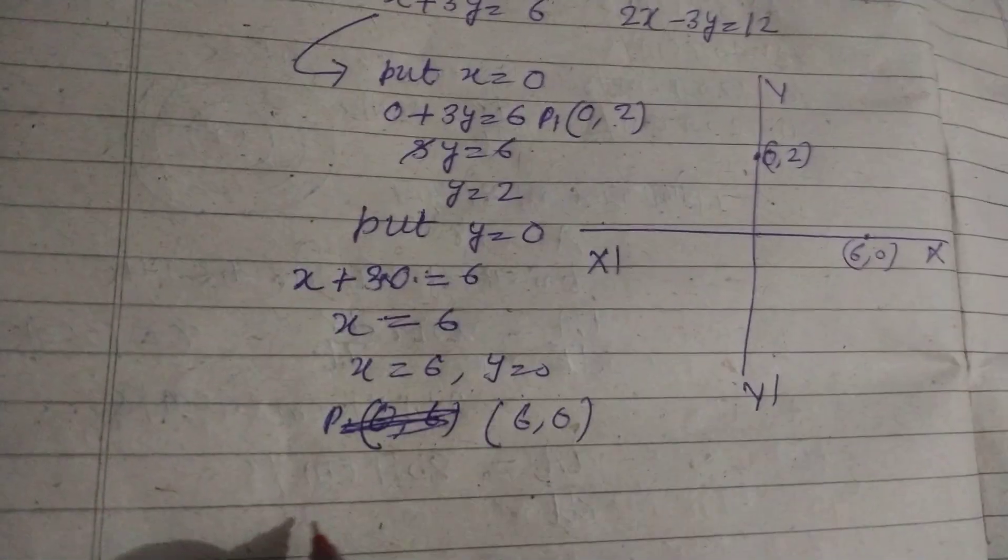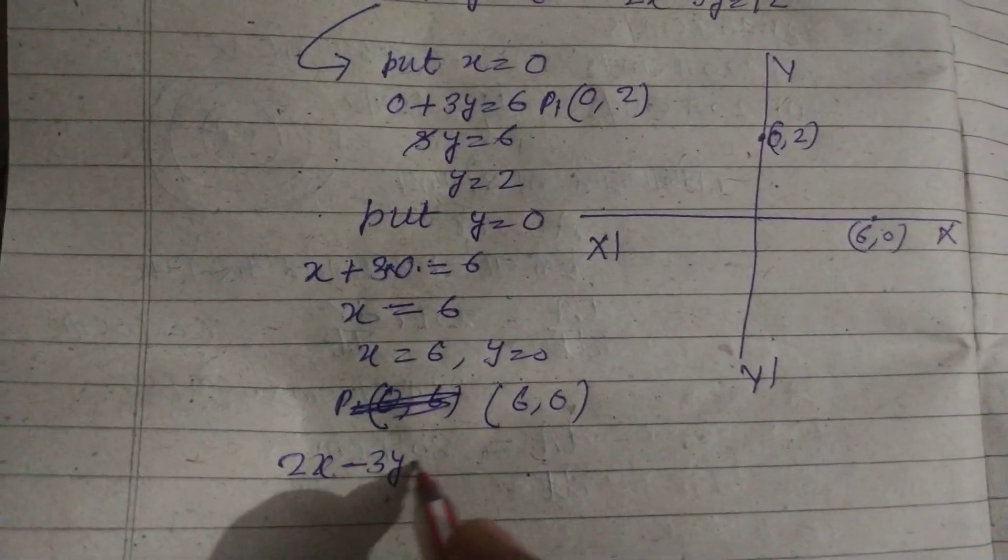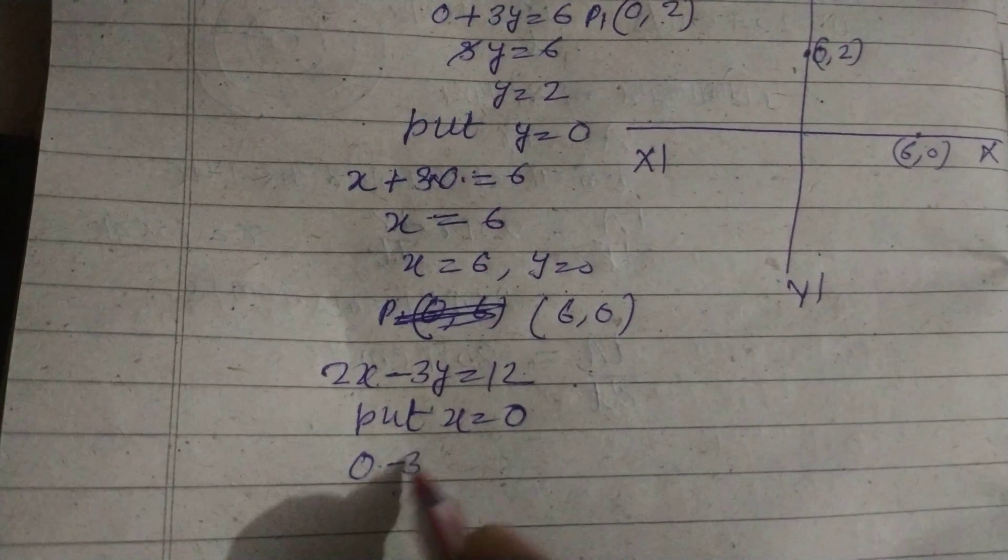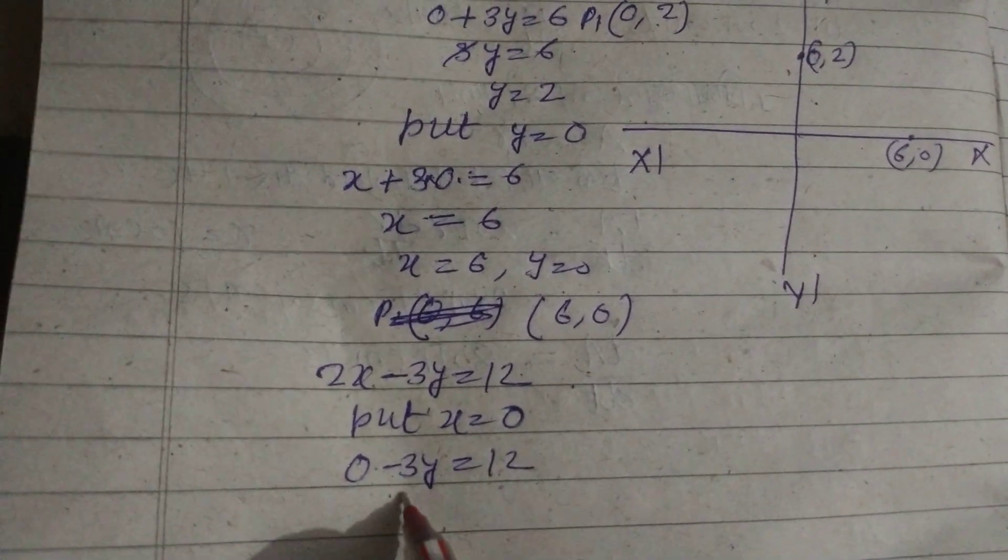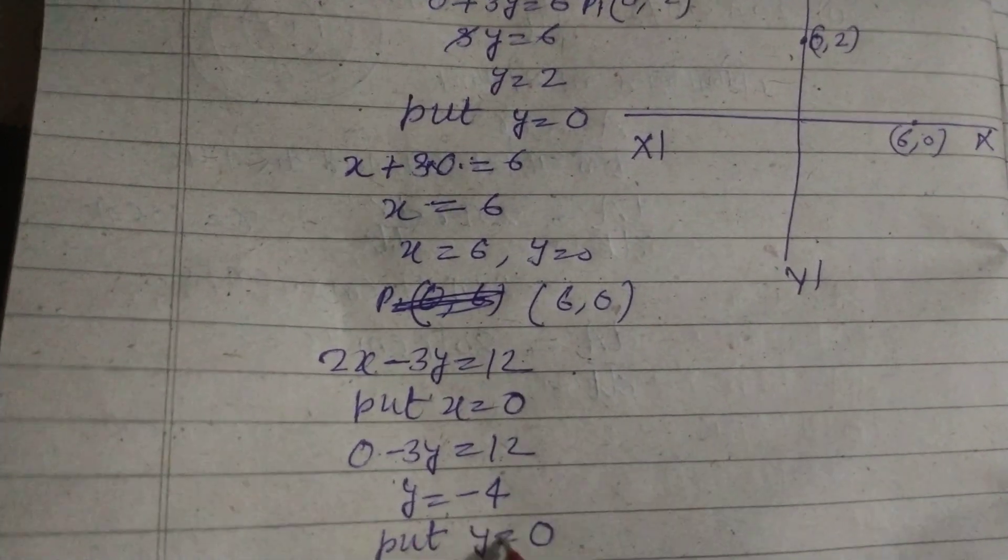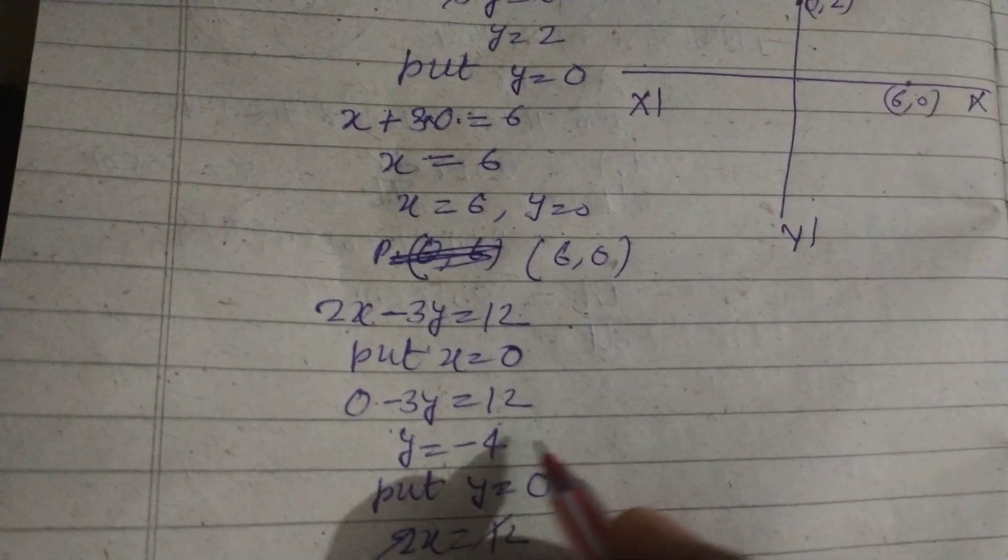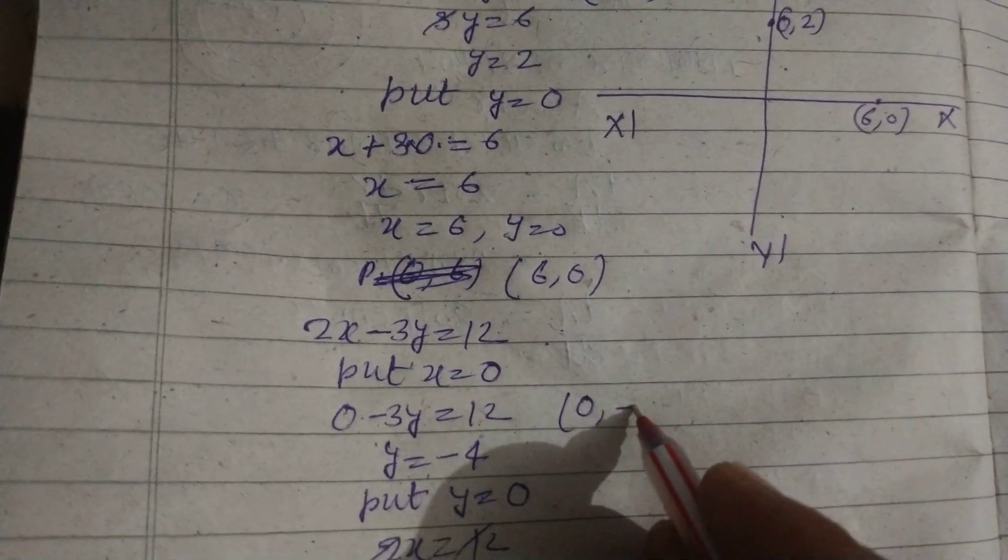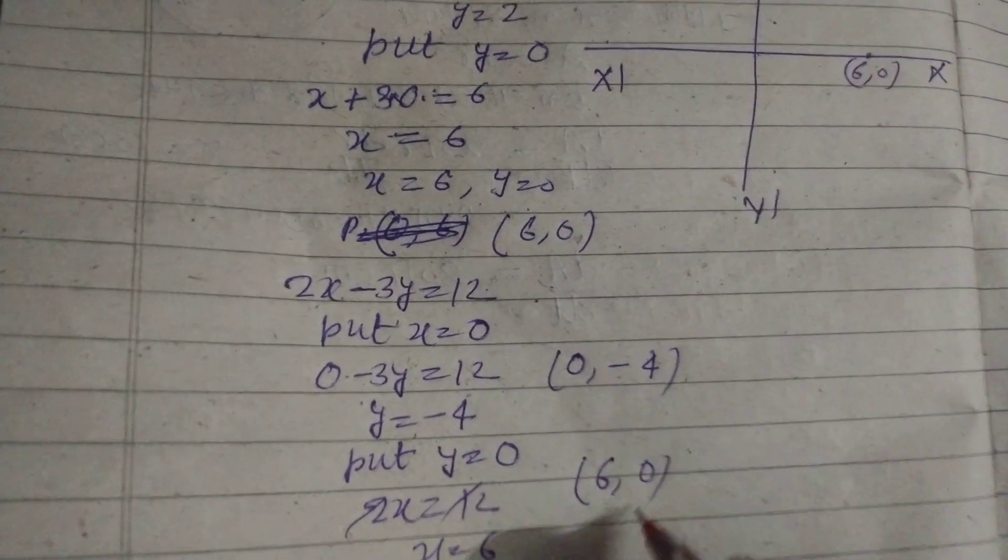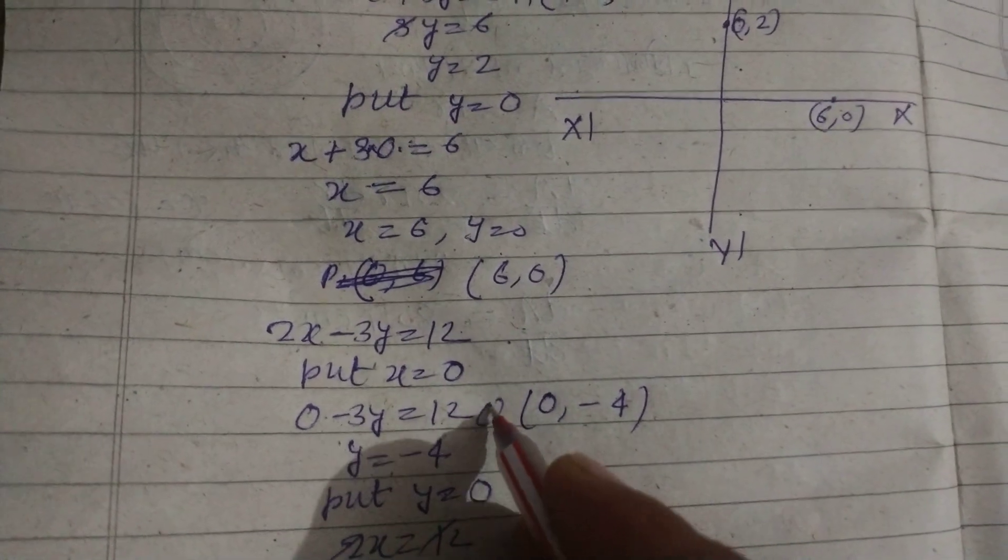Now we take the second equation which is 2x minus 3y equal to 12. Put x equal to 0. So minus 3y equal to 12, y equal to minus 4. Put again y equal to 0. You will get 2x equal to 12 or x equal to 6. So from here we got 0 comma minus 4 and 6 comma 0.